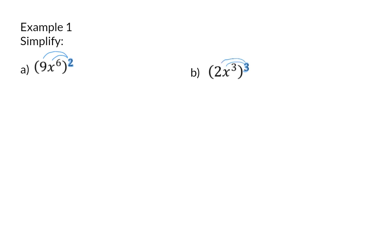If you need some revision on this you can go and have a look at video 3 again. So in A we will have 9 squared which is 81 and x to the power of 6 squared, which is 6 times 2 and that is 12.